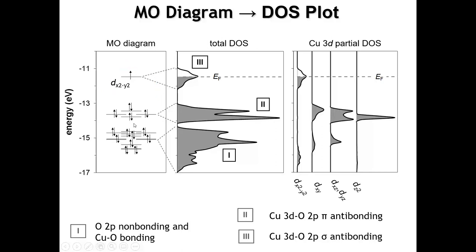We see four d orbitals at around minus 13 to minus 14 electron volts: the dxz, dyz, dxy, and dz². Then several electron volts higher we have the dx²-y², our sigma-antibonding MO. In this MO diagram, we also have a bunch of orbitals further down, and these orbitals are going to be predominantly oxygen 2p in character, with some mixture of copper in several of the orbitals to create bonding MOs.